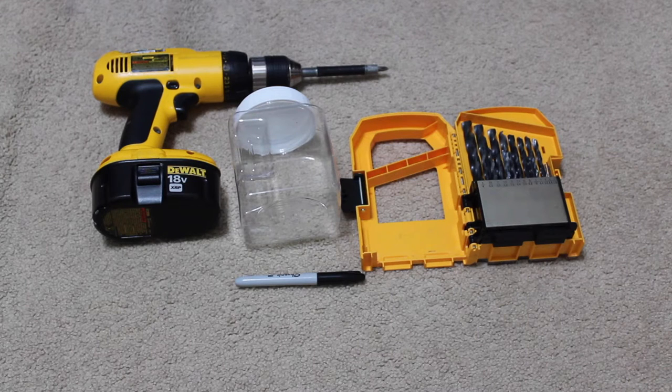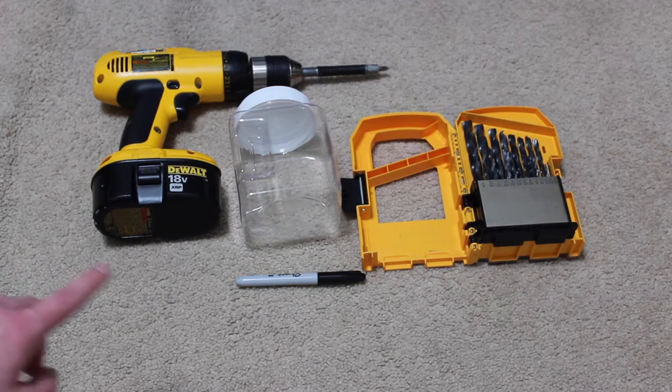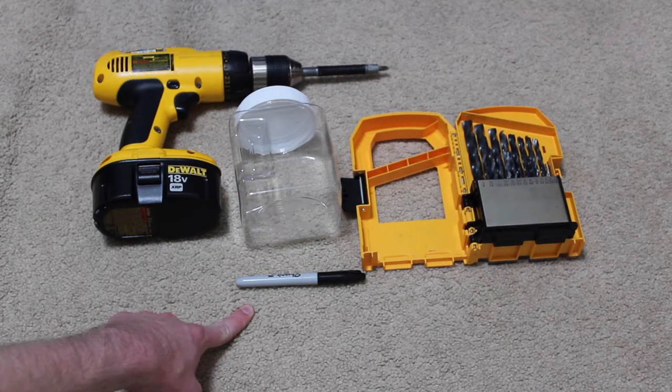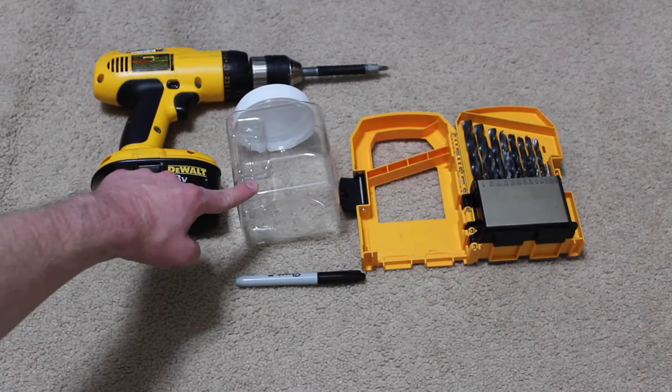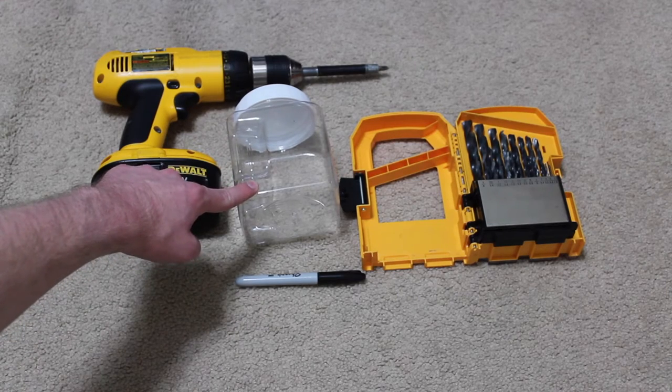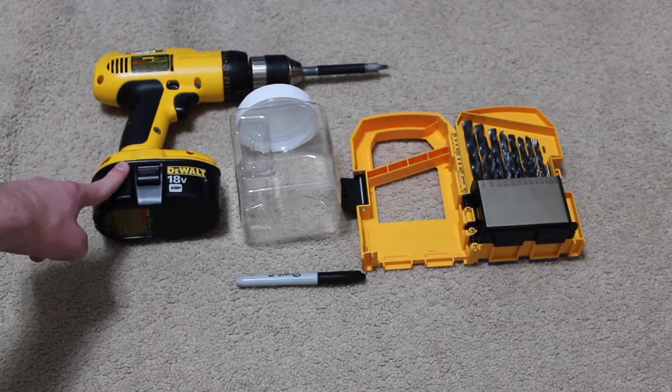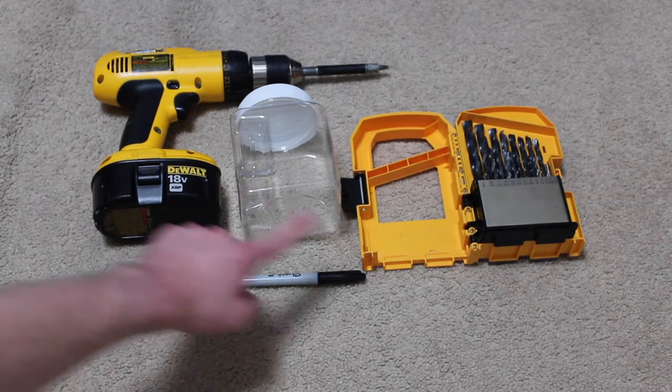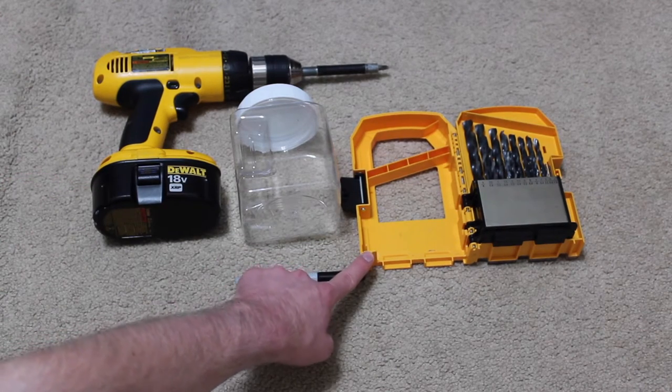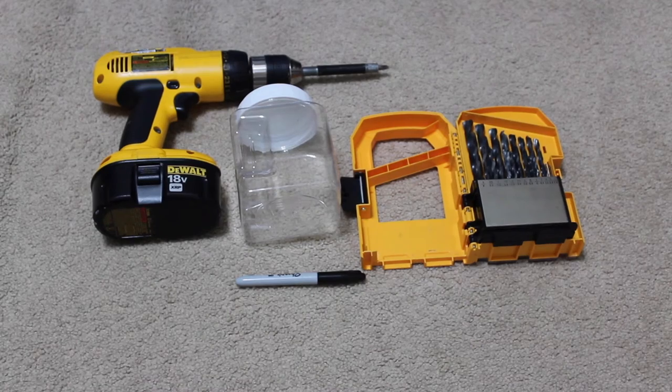Today's video is going to show you how to make a cheap arboreal enclosure. For this project, you're going to need a marker to mark your drilling sites, an enclosure (I got this one from my local dollar store), a drill, and a drill bit smaller than the carapace of your spider so they can't escape when you're done.